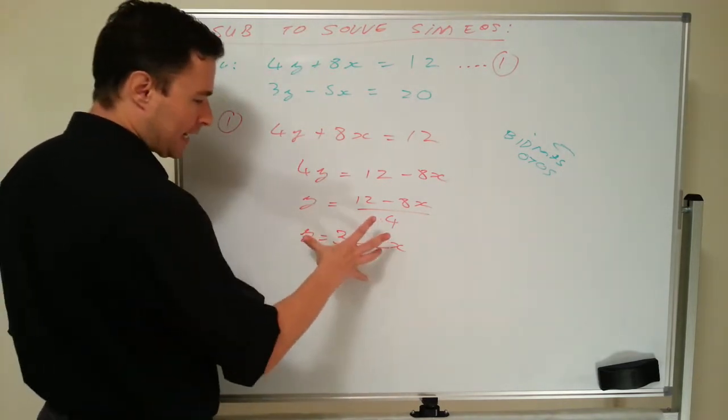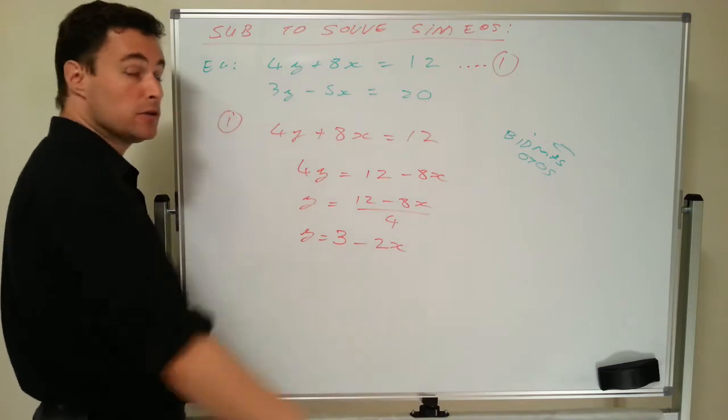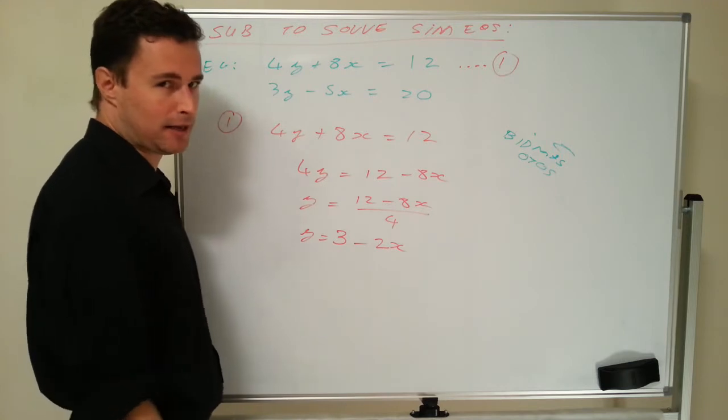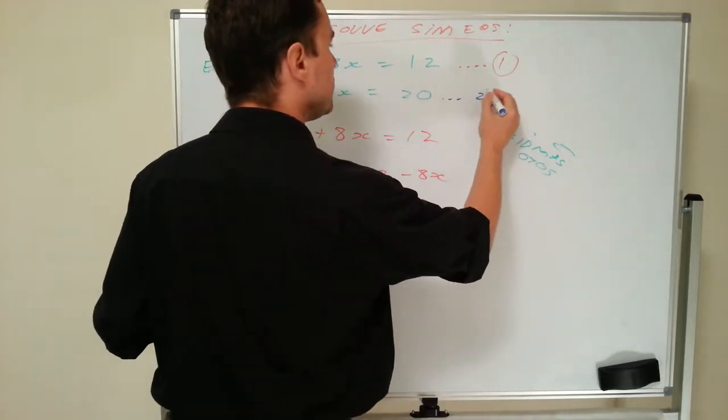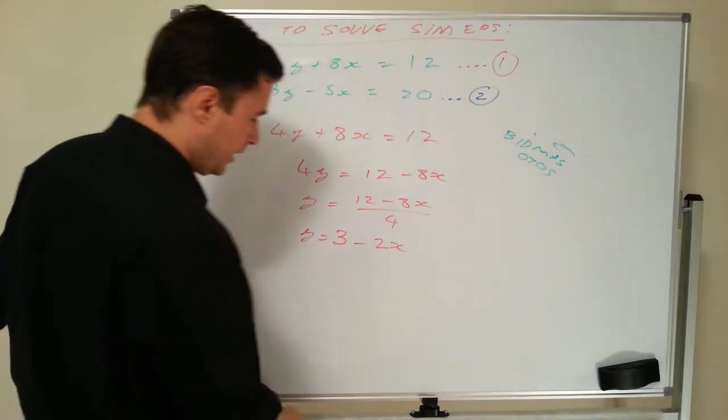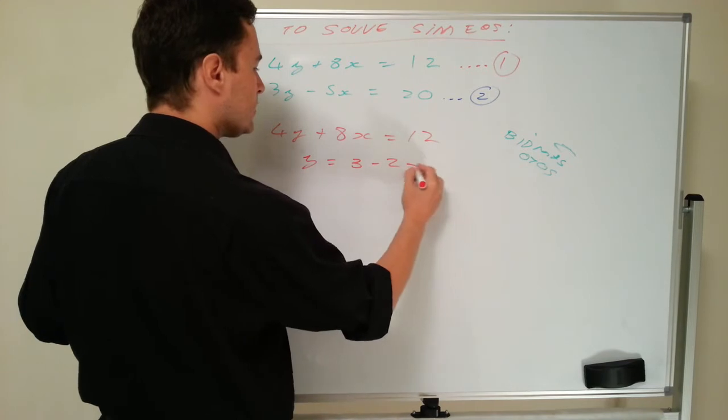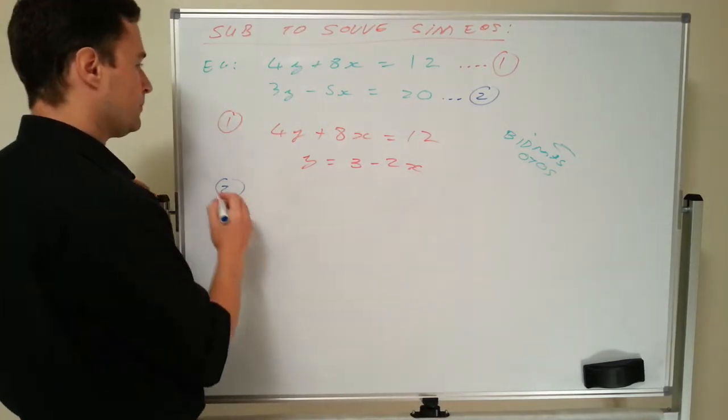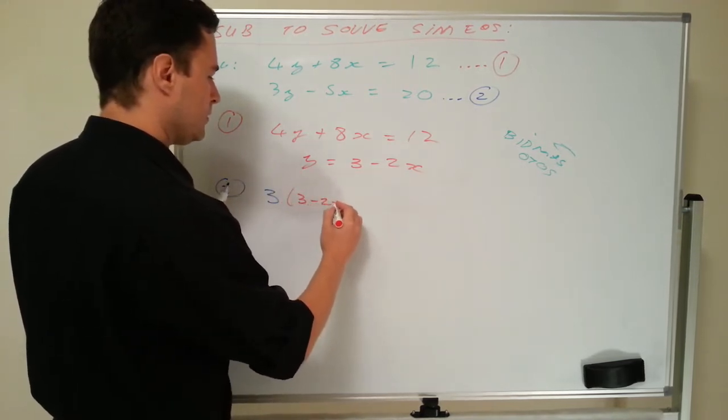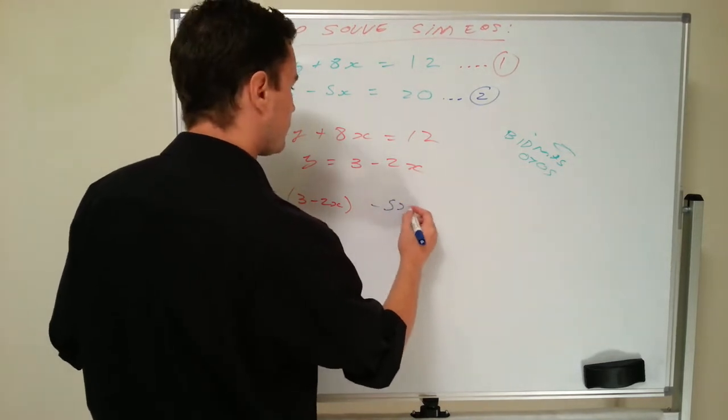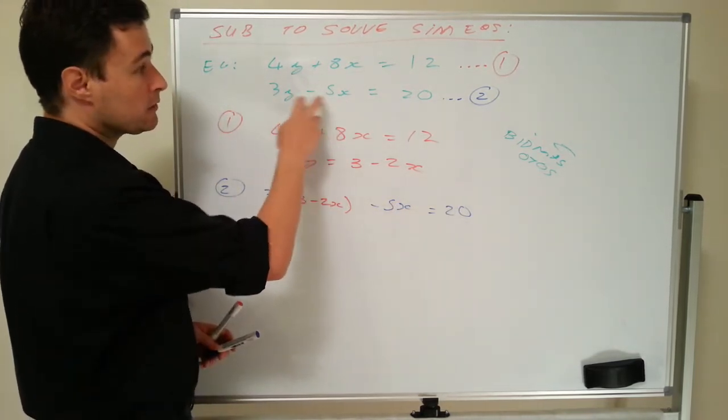Now my second step is I've got what y is, I can take this and put it into my other equation. Please don't put it back into the same equation you used to get y, otherwise you'll just be going in a circle. You won't work out y from that. You'll probably get a tautology like 12 equals 12 or something like that. So take it and put it back into the other equation. Let's call this equation 2. So I've got y equals 3 minus 2x, and I'm going to put it back into equation 2. So instead of writing y, I'm just going to write 3 minus 2x. Minus 5x equals 20. Now the reason why I do this is so that in this equation now, I've only got one variable, x. I don't have two variables, only one variable.